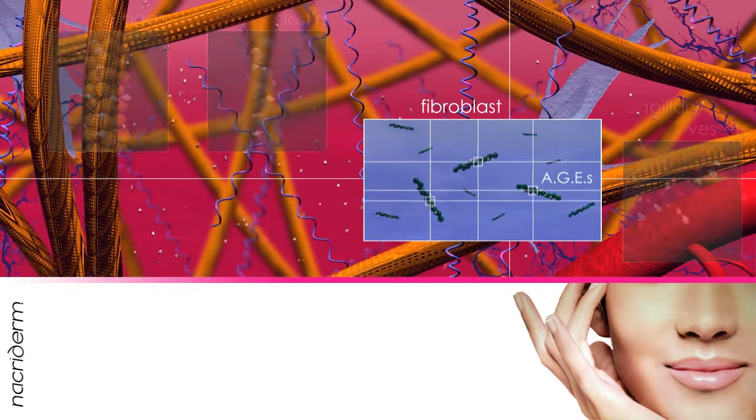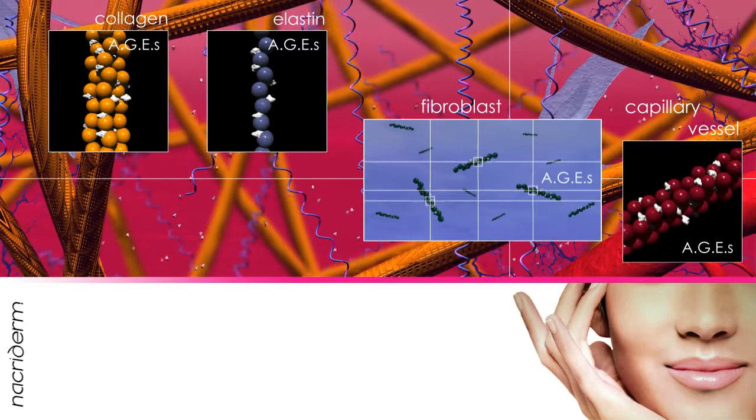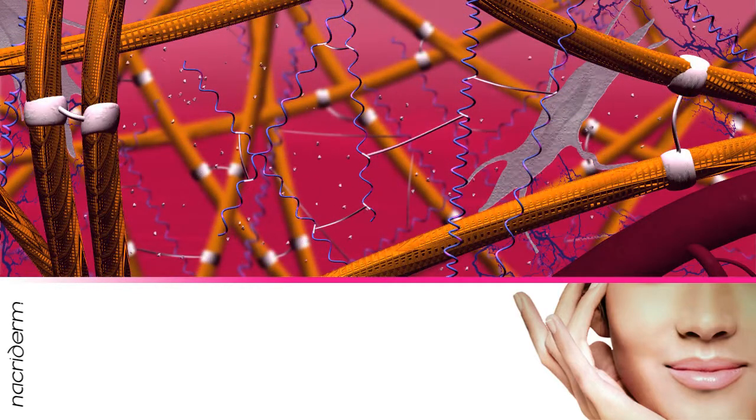AGE, advanced glycation end products resulting from these reactions, are very hard to metabolize. AGE remain prisoners in the cell and bring about its death in more or less the long term.